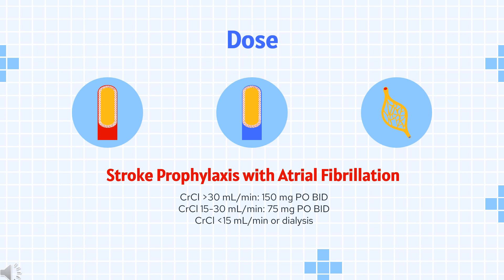DVT or PE Treatment: Indicated for treatment of deep vein thrombosis (DVT) and pulmonary embolism (PE) in patients who have been treated with a parenteral anticoagulant for 5–10 days. Also indicated to reduce the risk of recurrence of DVT and PE in patients who have been previously treated. CrCl greater than 30 mL per minute: 150 mg PO BID. CrCl less than or equal to 30 mL per minute or on dialysis: dosage recommendations cannot be provided. CrCl less than 50 mL per minute with concomitant use of P-gp inhibitors: avoid co-administration.